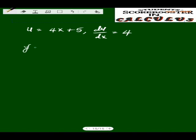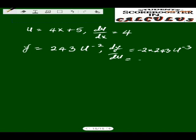And y from equation 2 is equal to 243 u raised to the power minus 2. From here, dy/du is equal to minus 2 times 243 u raised to the power minus 3. So further simplification of this is equal to minus 486 u raised to the power minus 3.